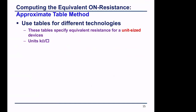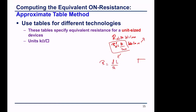The approximate table method is similar to what we studied before. For a width of 1 micron, Rn equals 1 kΩ. For a width of 10 microns, Rn prime is 1k over 10 microns, so resistance decreases. Recall that resistance equals ρ·L/A. For a wire with width W, height H, and length L, this equals ρ·L/(H·W), summarized as R-square times L over W.